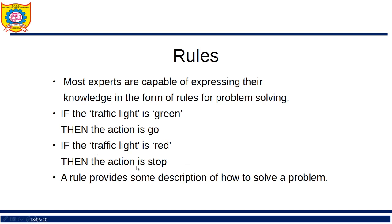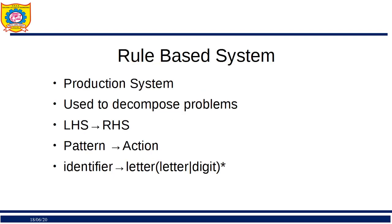This rule-based system is also called a production system. These rules provide a description of how to solve a particular problem. Rules have a left-hand side and a right-hand side. On the left-hand side there is a pattern. For example, wanting to go for dinner is the pattern, and the action is to go to Pizza Hut or Saravana Bhavan.